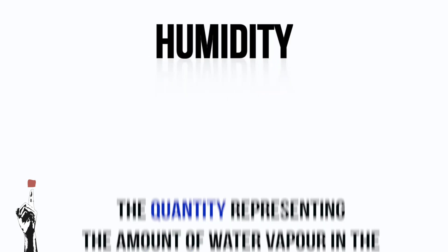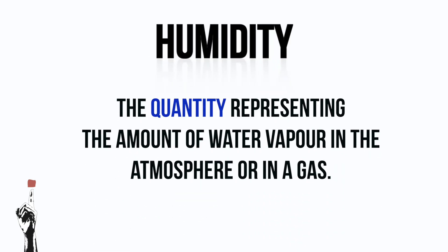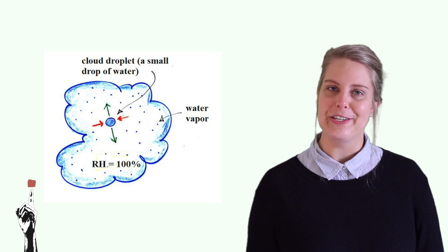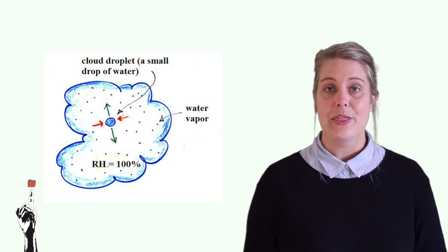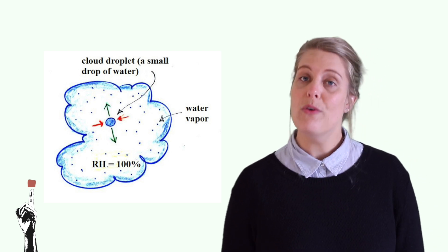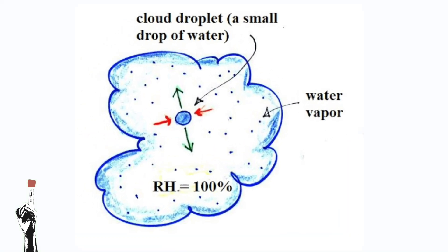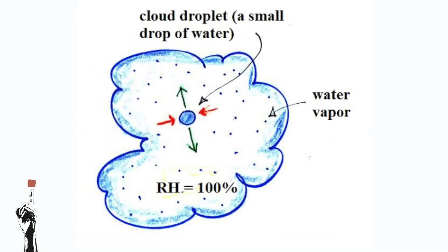Humidity is the quantity representing the amount of water vapor present in the atmosphere. When the air is fully saturated, the water will fall to the ground as hail, snow, or sleet.